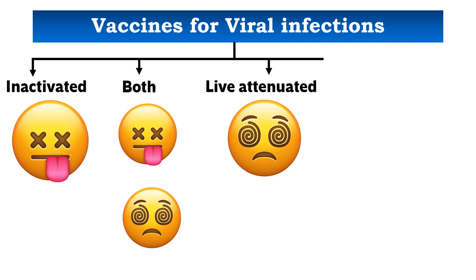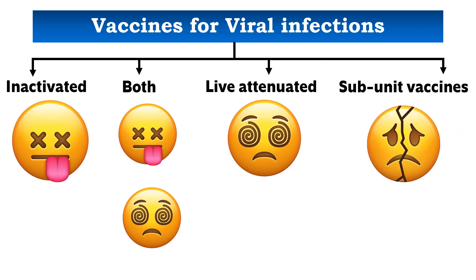We have successfully finished the first three groups: inactivated vaccines, live attenuated vaccines, and both inactivated plus live attenuated vaccines against viral infections. There is also a fourth group — subunit vaccines. For certain viruses, only a particular subunit of the virus is necessary to initiate immunity, so that viral component alone can be used as a vaccine rather than the whole virus.